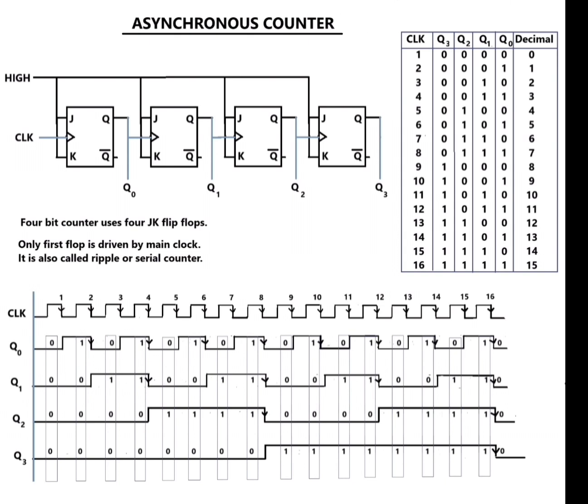Waveform of all flip-flops given with clock waveform, and truth table also given here for output of flip-flops Q0, Q1, Q2, Q3. For clock 1, output is 0000, and in last clock 16, the output is 1111, and decimal equivalent to 15. Okay, thank you.